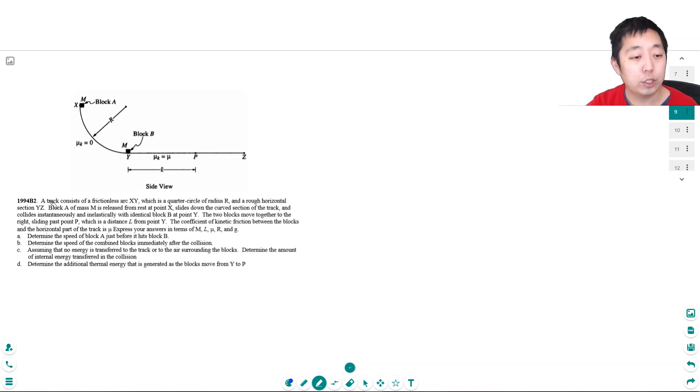A track consists of a frictionless arc xy which is a quarter circle of radius r and a rough horizontal section yz. Block a of mass m is released from rest at point x, slides on the curved section of the track, and collides instantaneously and inelastically with an identical block b at point y. The two blocks move together to the right sliding past point p which is a distance l from point y. The coefficient of kinetic friction between the blocks in the horizontal part of the track is mu.